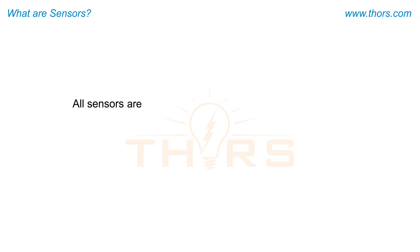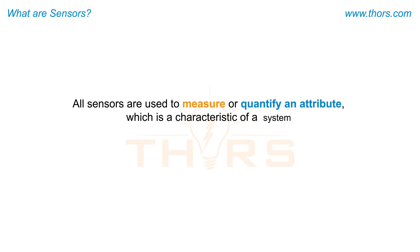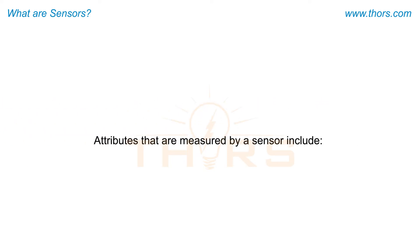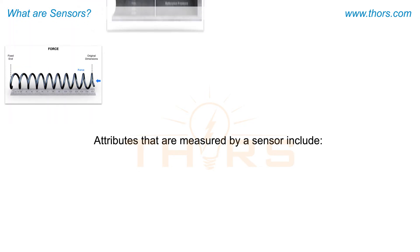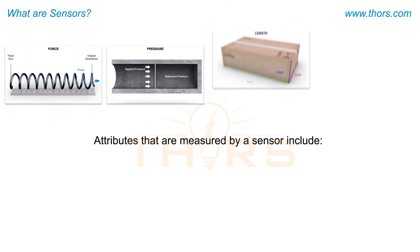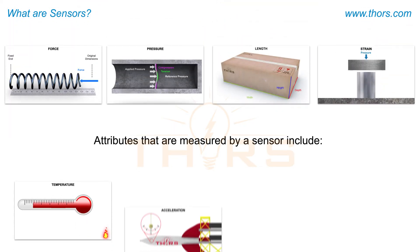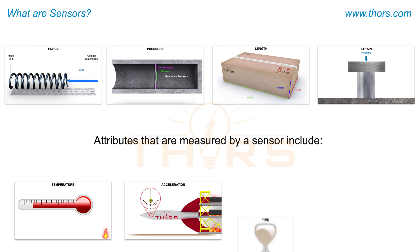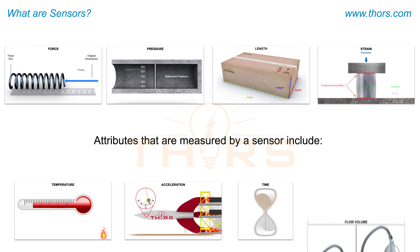All sensors are used to measure or quantify an attribute, which is a characteristic of a system or thing that can be measured. Attributes that are measured by a sensor include force, pressure, length, strain, temperature, acceleration, time, and flow volume.